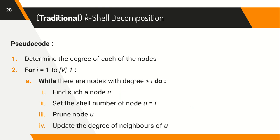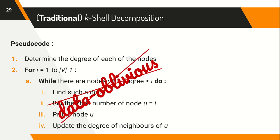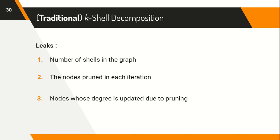The pseudocode for the process is given here. The outer for loop determines the shell value currently being assigned and the inner while loop determines the nodes pruned and assigned the current shell. Clearly, the algorithm does not qualify as data oblivious. An algorithm is data oblivious if the execution of its instructions and memory accesses during its run are independent of the input. The K-shell algorithm can leak sensitive information such as the number of shells the graph is decomposed into, the nodes pruned in each iteration, and the nodes whose degree is updated — all of which depend on the input graph structure. As a solution, we design a data oblivious equivalent of the algorithm and translate it into a secure protocol.